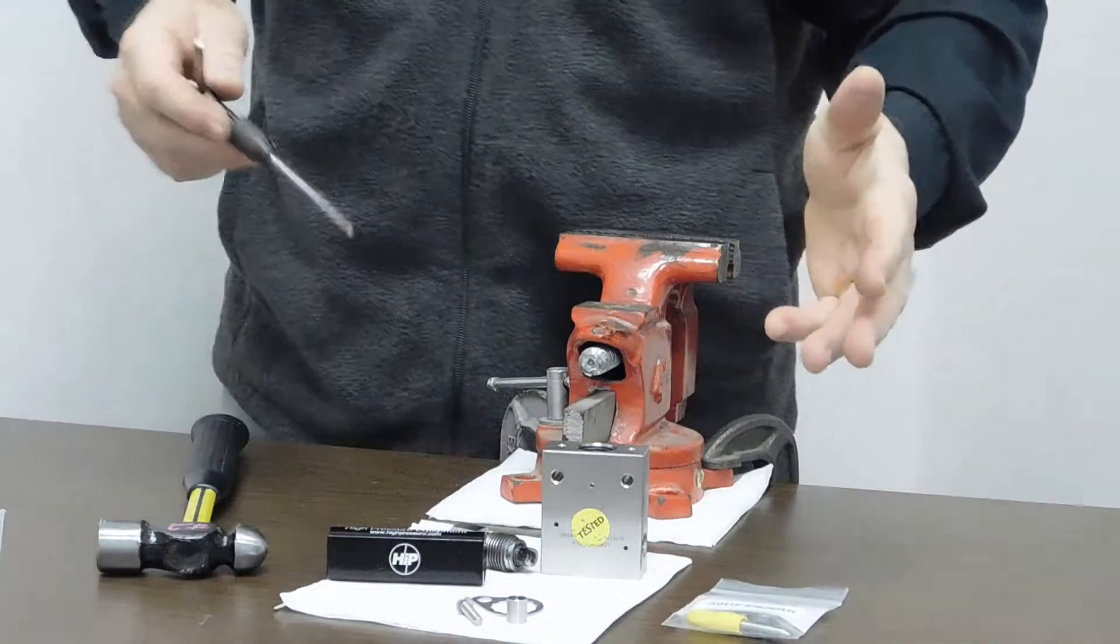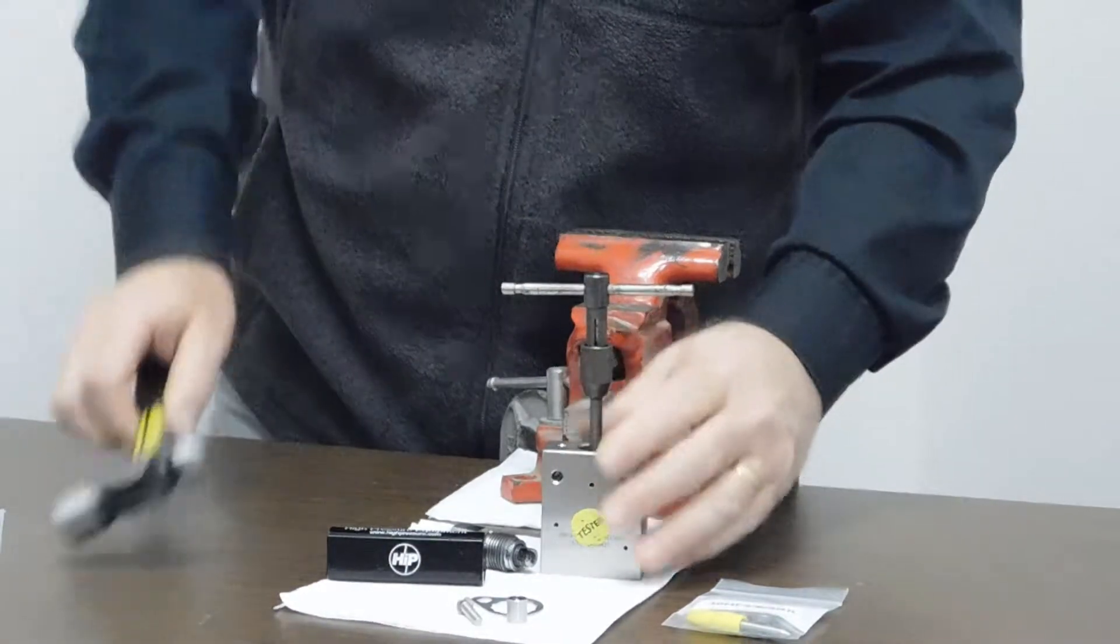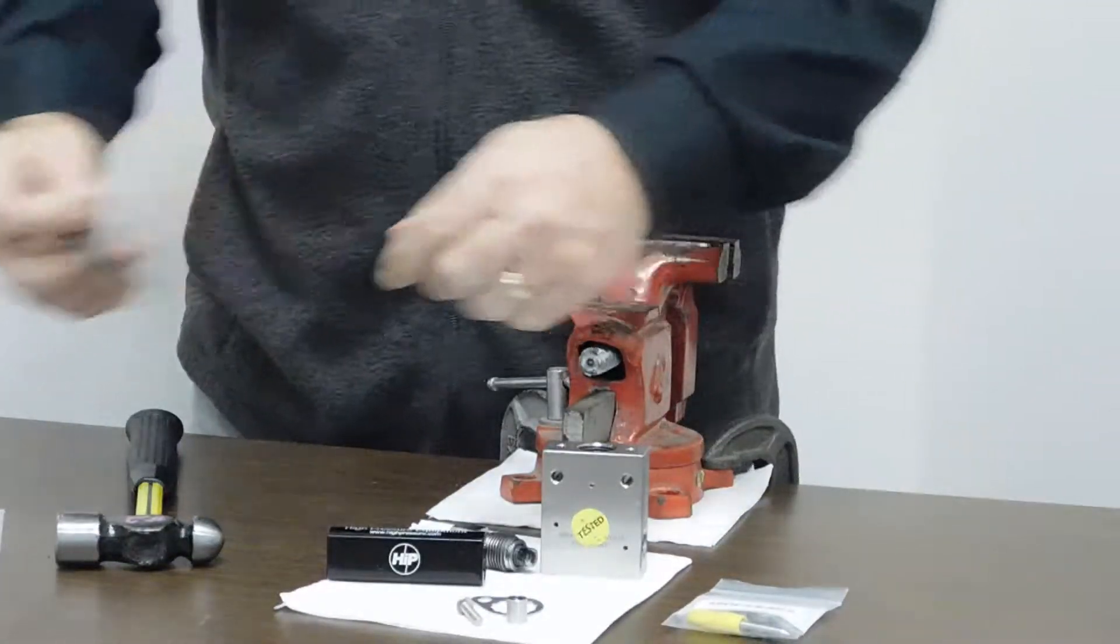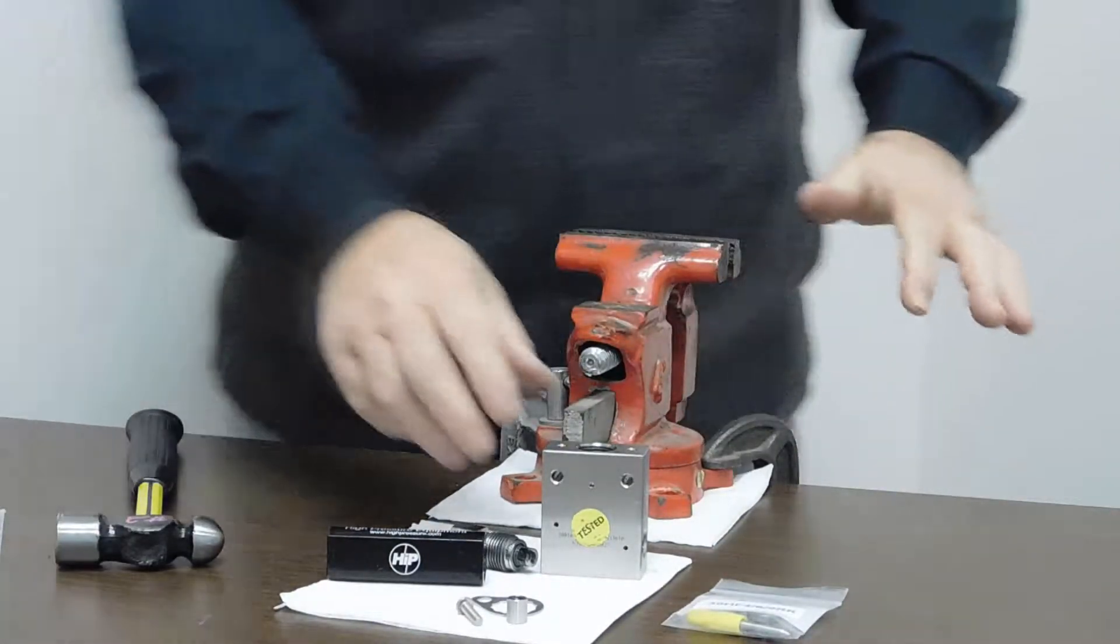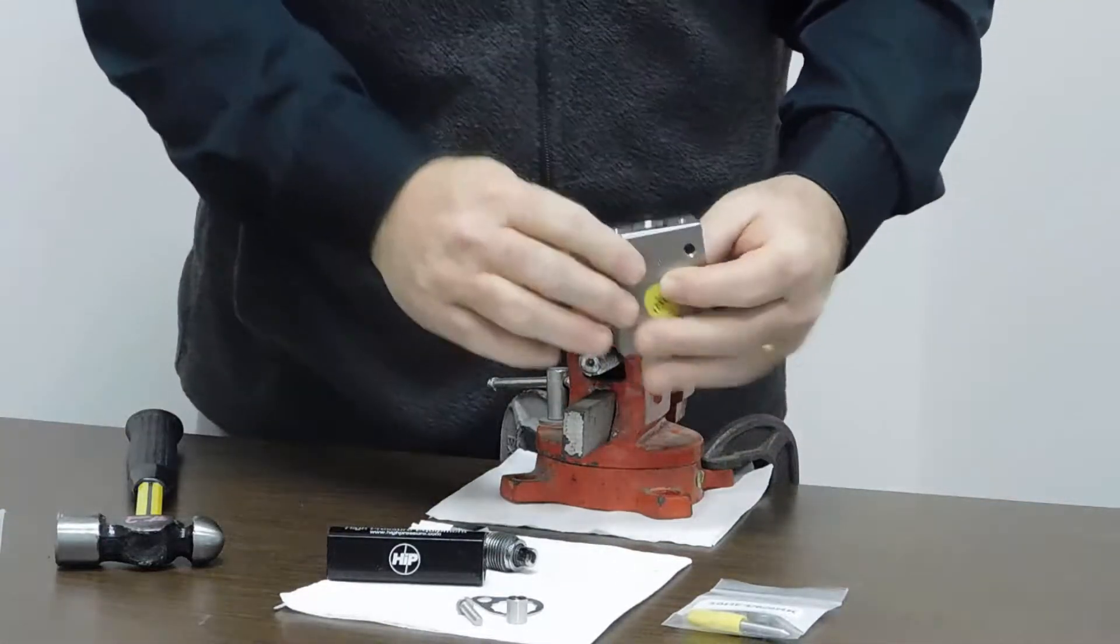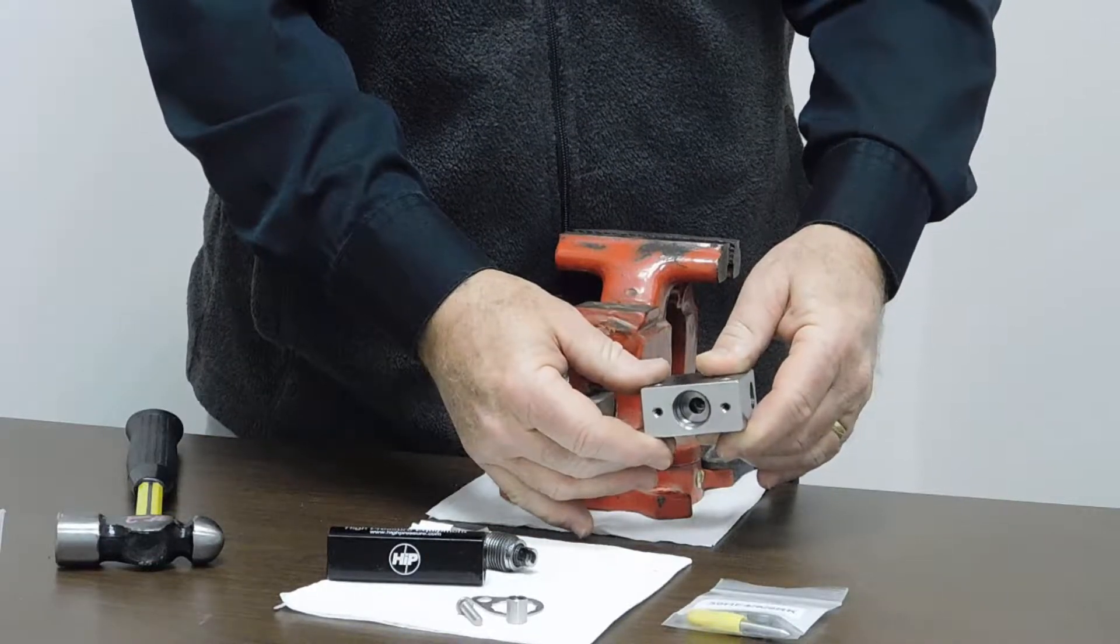The last part that comes out would be the bottom spacer. Again, just a slight tap with the hammer and that lower spacer should come right out of the body. So now our body is completely empty. We have no more packing components inside the bottom of the block. What I like to do is make sure that there's no nicks or scratches or debris down inside the valve block. This one looks pretty good.